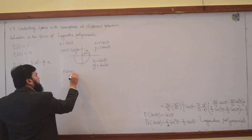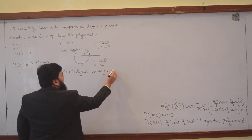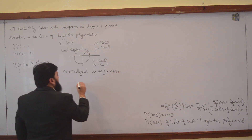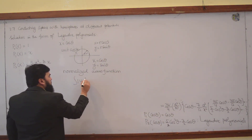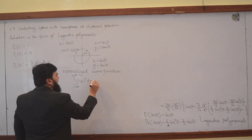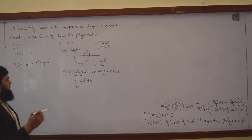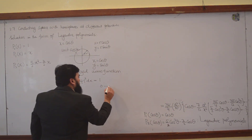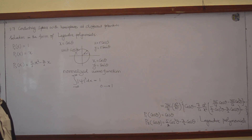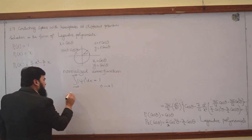In quantum mechanics you have studied the normalized wave function. You take the integral of |ψ|² from minus infinity to plus infinity, and this equals 1. This is normalizing your wave function. Normalizing means making your function vary between 0 and 1.